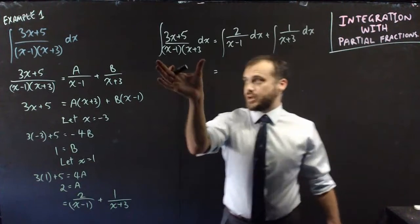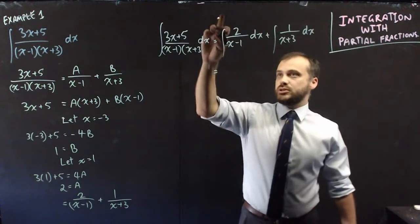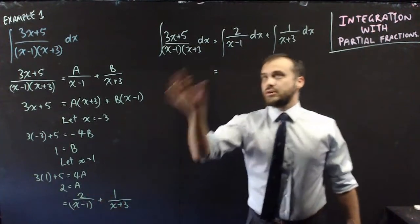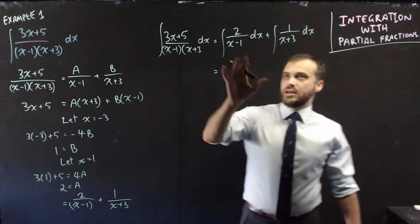Pretty straightforward. So there's the setup. We're bringing our integral over to here with respect to x. That's going to be equal to the integral of the first function with respect to x plus the integral of the second function with respect to x.